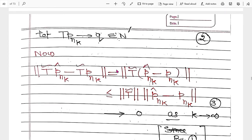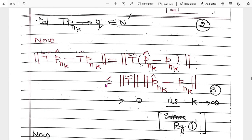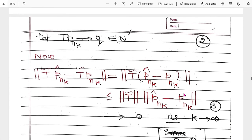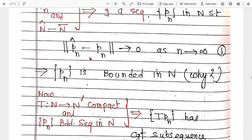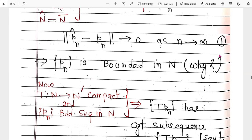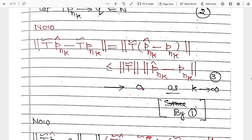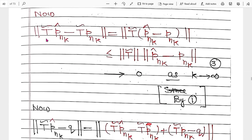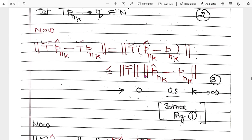By using the definition of bounded operator: T-bar(p_{n_k}^hat) minus T-bar(p_{n_k}) is less than or equal to the norm of T-bar times the norm of (p_{n_k}^hat - p_{n_k}). Now this approaches to zero by equation (1), since ||p_{n_k}^hat - p_{n_k}|| approaches zero. So this is less than or equal to the norm times this, and by equation (1) it approaches to zero. Also T(p_{n_k}) is convergent to Q.